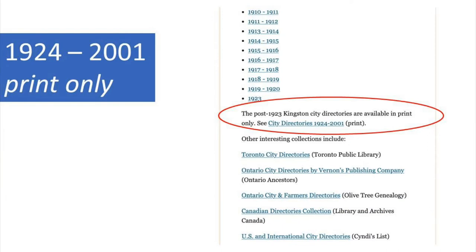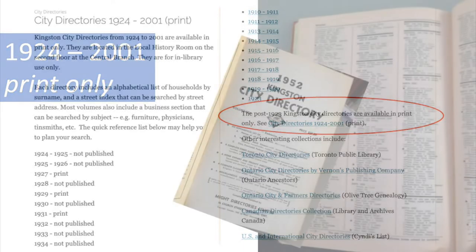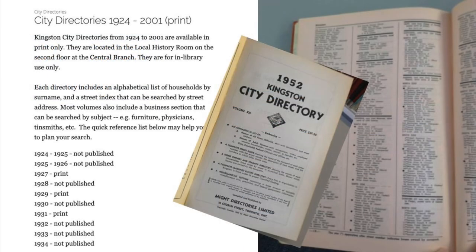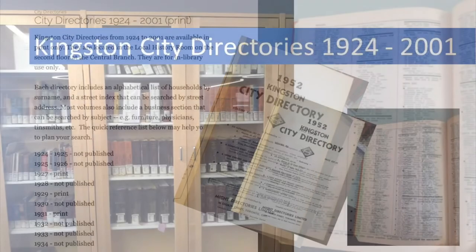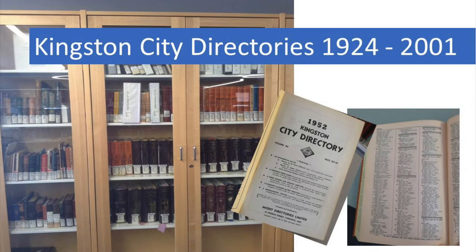For copyright reasons, the city directories from 1924 onward are not yet available online. You're welcome to consult the print copies available in the Special Collections cabinet anytime the Central Library is open. City directories were not published every year, and on the Digital Kingston site there's a list which shows which years are available. The city directories ceased publication after 2001.